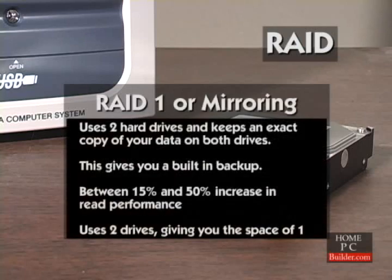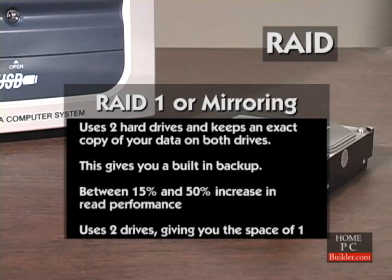RAID 1, sometimes referred to as mirroring, uses two hard drives and keeps the same data on both drives. This gives you a built-in backup at all times, and gives you around a 15% to 50% increase in reading data from the drives. The downside is that you are using two hard drives and only getting the space of one — so if you have two 250GB drives, you are only getting 250GB of hard drive space.